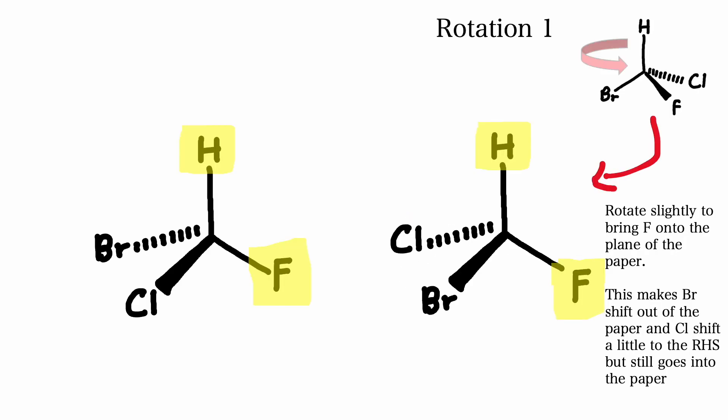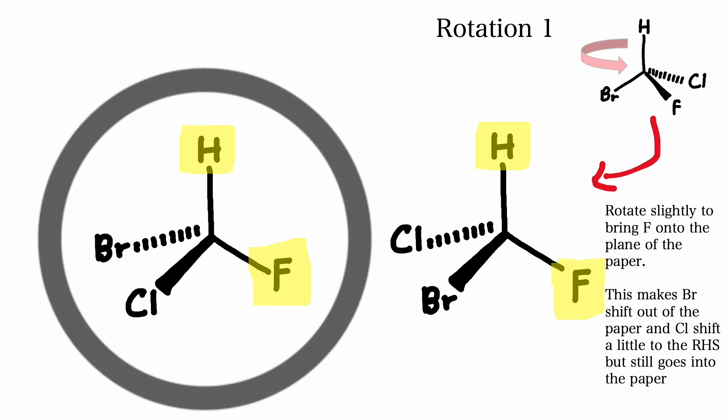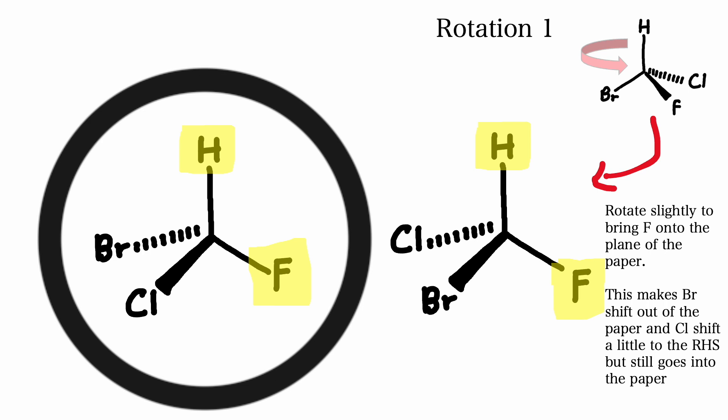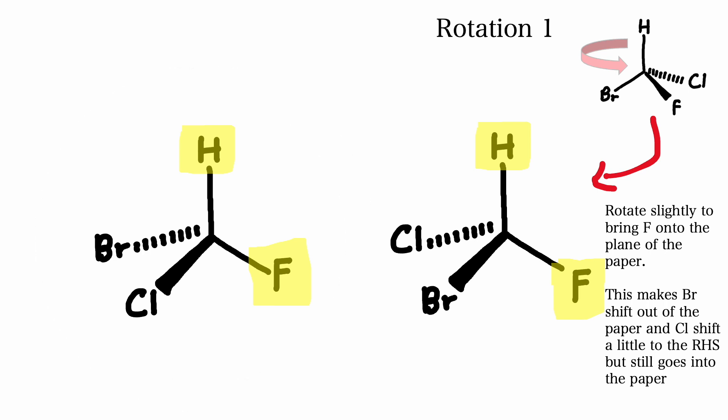If we rotate it anticlockwise slightly to try and get it to superimpose on the original molecule that we took the mirror image of, we see that fluorine is now on the plane of the page, bromine is coming out of the page, and chlorine has shifted a little to the right-hand side but still goes into the page.